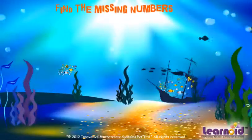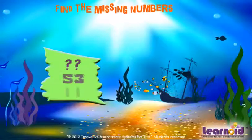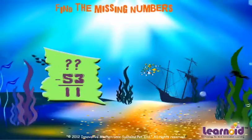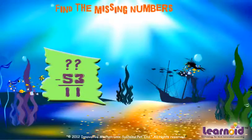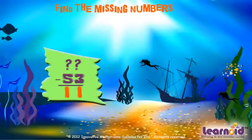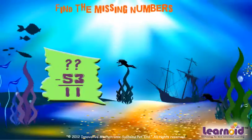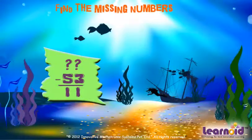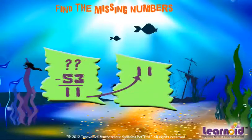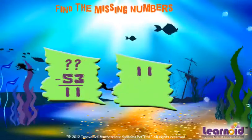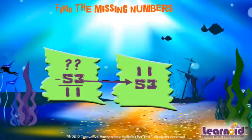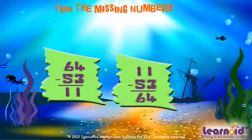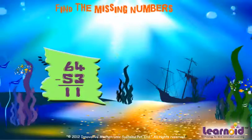Let's see another example. We know two numbers only. Second number is 53. Third number is 11. We have to find the first number. Put the third number on top and the second number below it. The sum is our missing number.